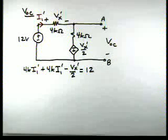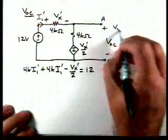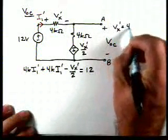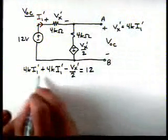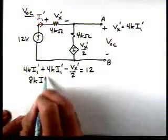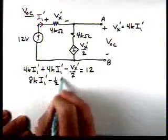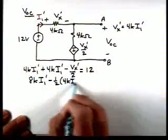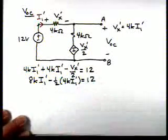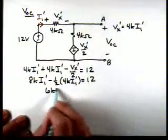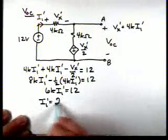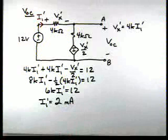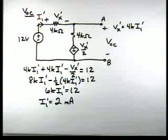Now, if we look at our circuit, we can see from Ohm's law that Vx prime is 4K times I1 prime. So now if we substitute in and do some arithmetic, we'll have 8K I1 prime minus 1 half 4K I1 prime is equal to 12. So we get 6K I1 prime is equal to 12, or that I1 prime is equal to 2 milliamps.